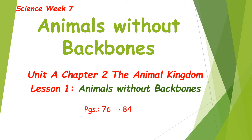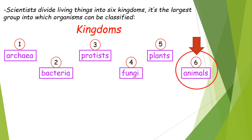Hello everyone, this is our science lesson for week seven. It's lesson one from chapter two, which is about the animal kingdom. The lesson is 'Animals Without Backbones.' We learned that scientists divide living things into six kingdoms, one of which is the animal kingdom.